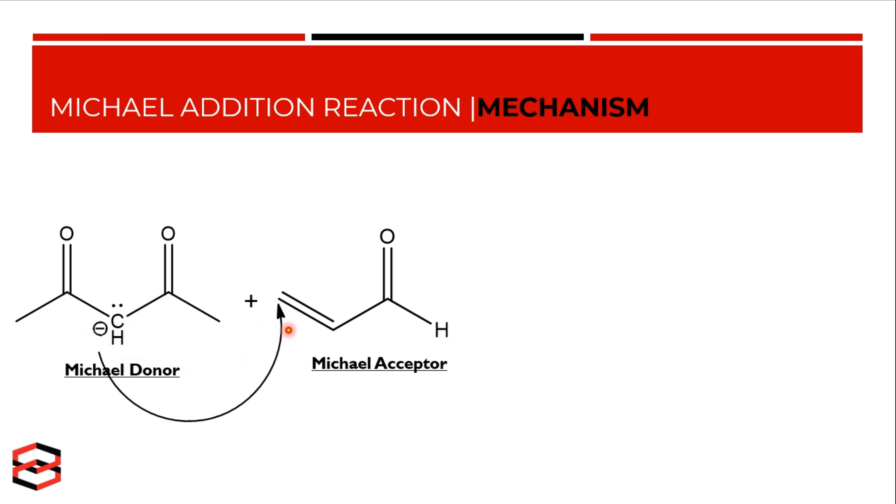This attack causes these pi electrons to move to the adjacent bond, breaking that pi bond. Now let's count the longest chain, which is one, two, and three carbons. Carbon three attacks the beta carbon of the Michael acceptor, which we will call carbon four. So a six-carbon chain is produced, which looks like this.